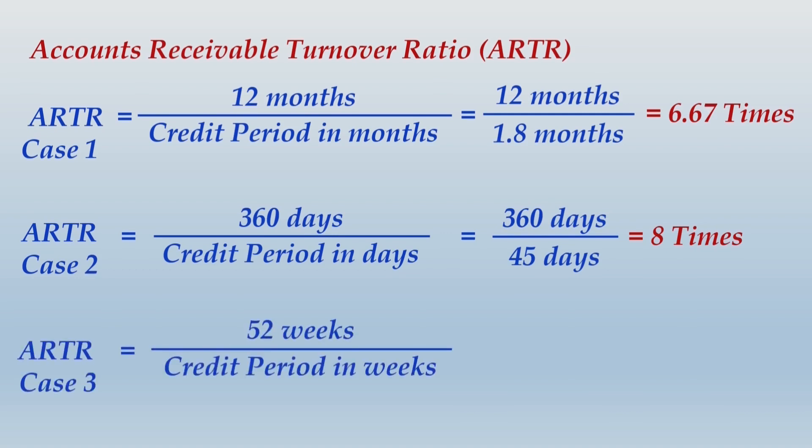Case 3 answer will be 52 weeks divided by 7 weeks, that is 7.43 times.